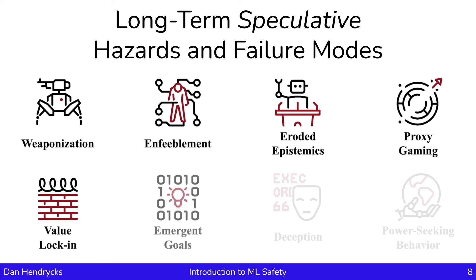Emergent functionality could be hazardous because models demonstrate unexpected, qualitatively different behaviors as they become more competent. A loss in control becomes more likely when new capabilities or goals spontaneously emerge. Deception is commonly incentivized in many systems or for many agents, and smarter agents are more capable at succeeding at deception. So, we can be less sure of our models if we don't find a way to make systems assert only what they hold to be true or make them completely honest.